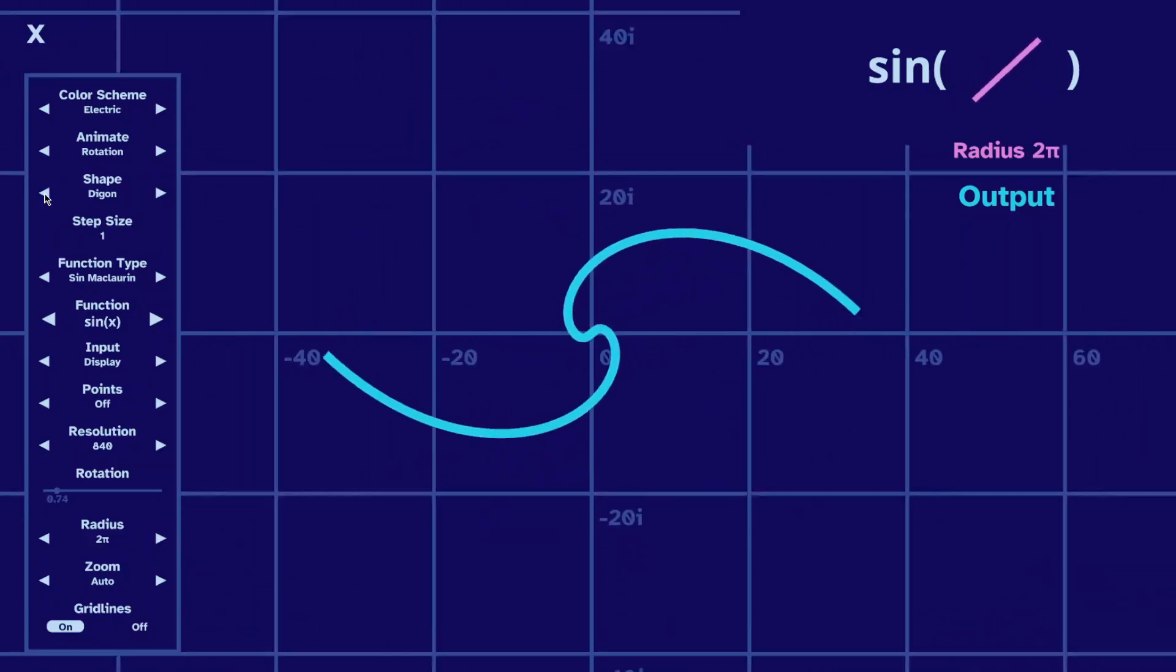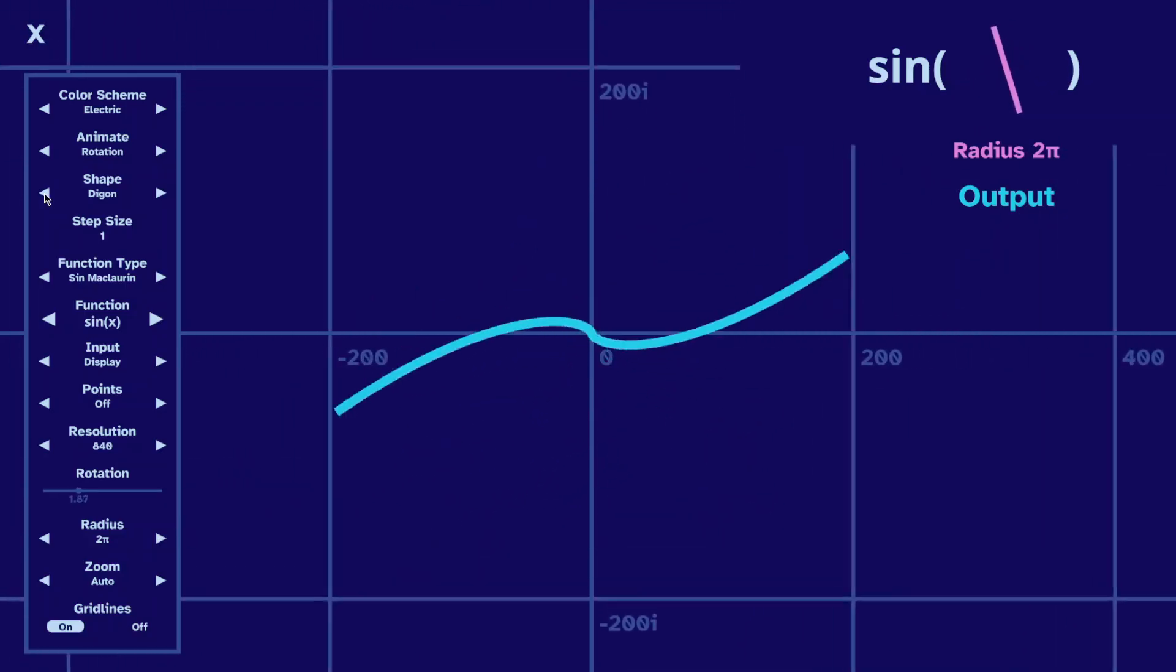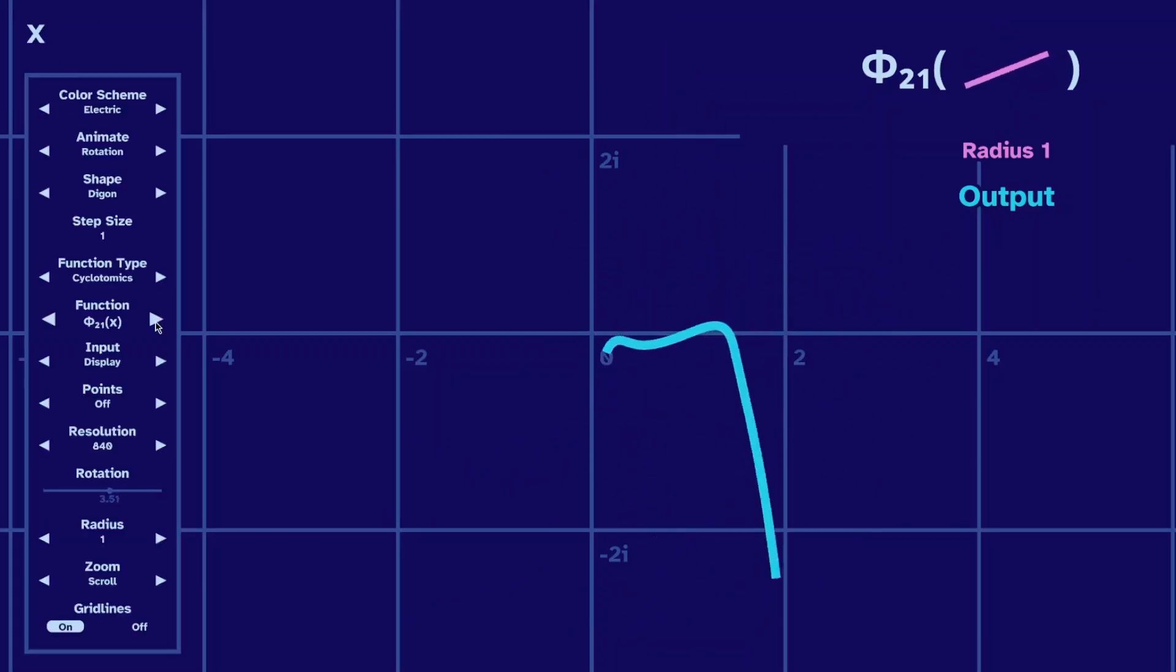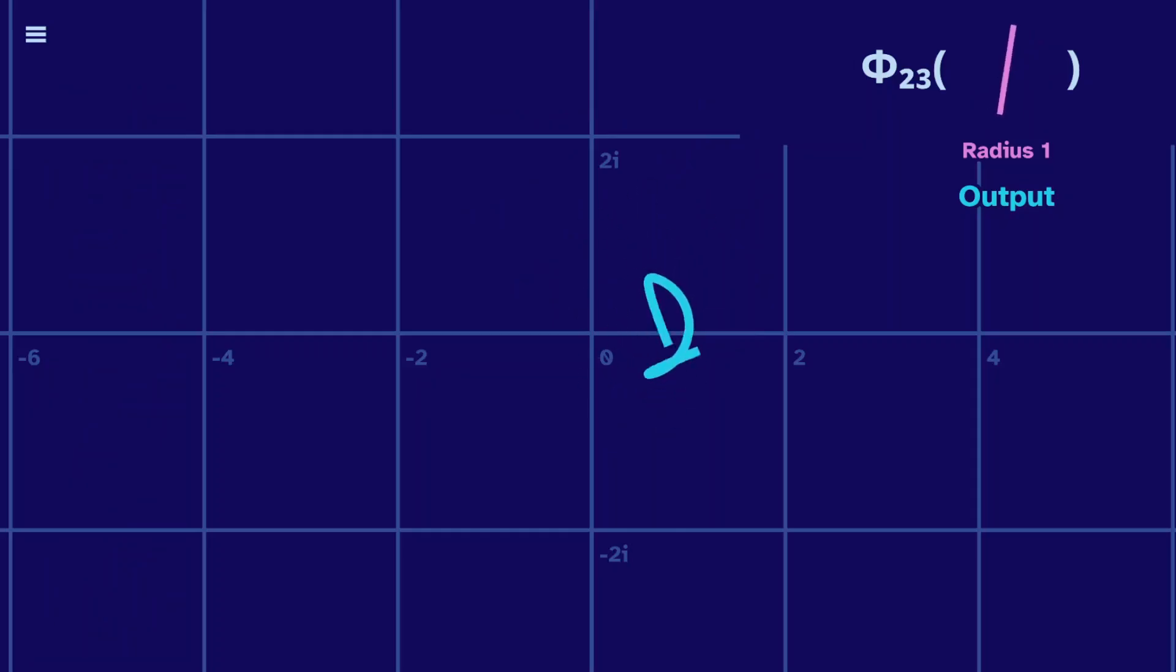This diagon rotation is nice with other functions, too. Let's look at the 21st cyclotomic polynomial. The output spins its arms. And they spin even faster with the 23rd cyclotomic.